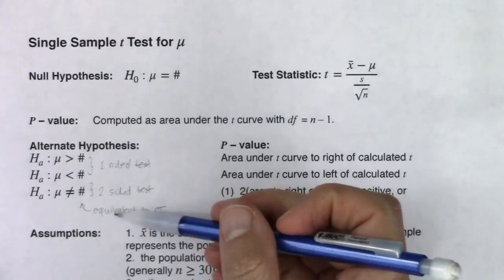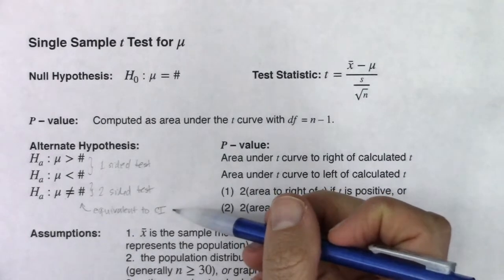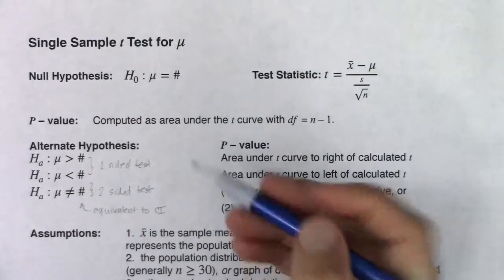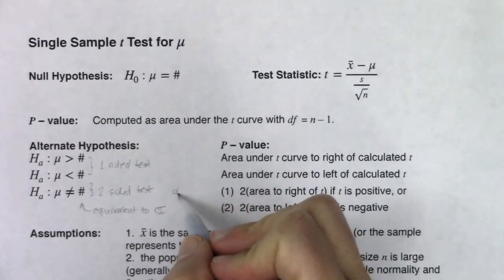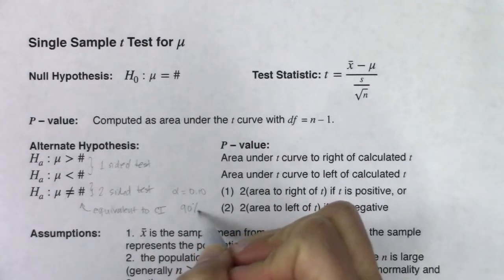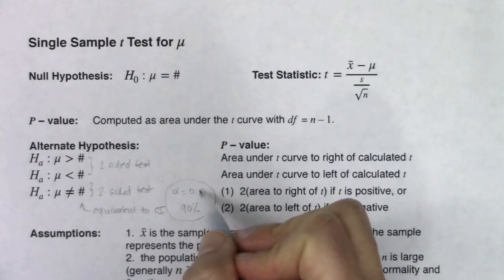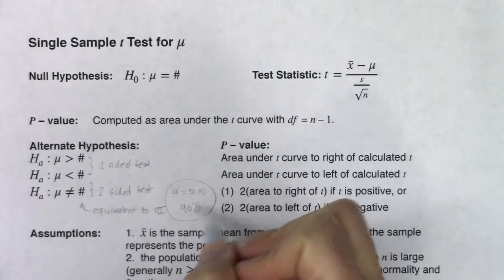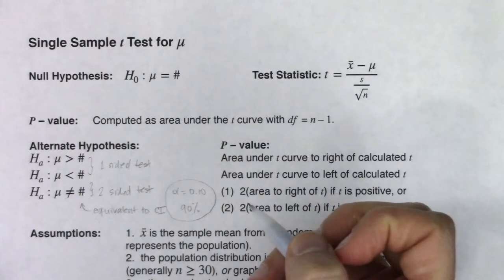The relationship has to be that whatever your alpha level is for your hypothesis test, it has to be complementary to the confidence level. If you were running alpha at 10%, that would be equivalent to a 90% confidence interval. Your alpha and your confidence level have to add up to 100% — they're complementary.